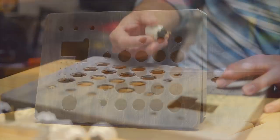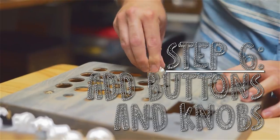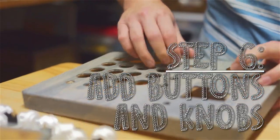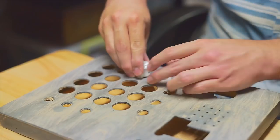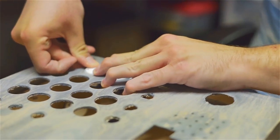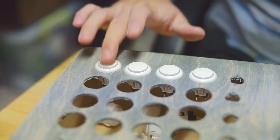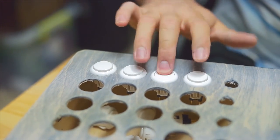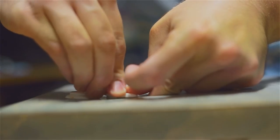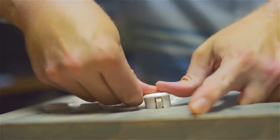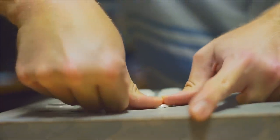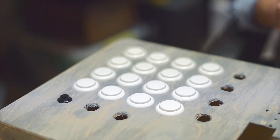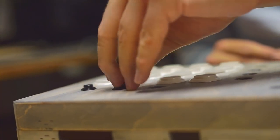Now that the stain on our enclosure is dried, let's pop in some components and buttons. First, we'll start with the 24mm Sanwa arcade buttons. Then we'll move onto the mini arcade buttons.